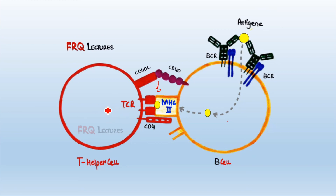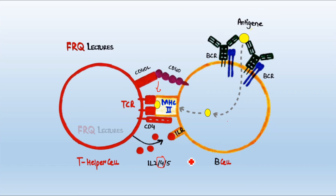The third phase involves chemical signaling. The T helper cell releases a chemical called interleukin 4. This interleukin 4 moves toward the B cell, which has receptors for it — the ILR or interleukin receptors. After interleukin 4 is recognized by these receptors, a series of changes take place within the B cell: it starts producing different proteins and molecules, resulting in a process known as hypermutation.